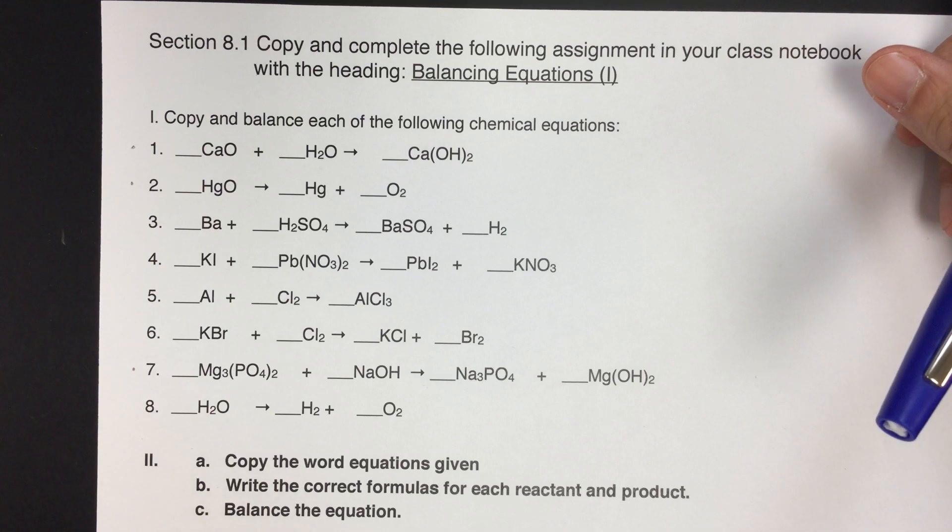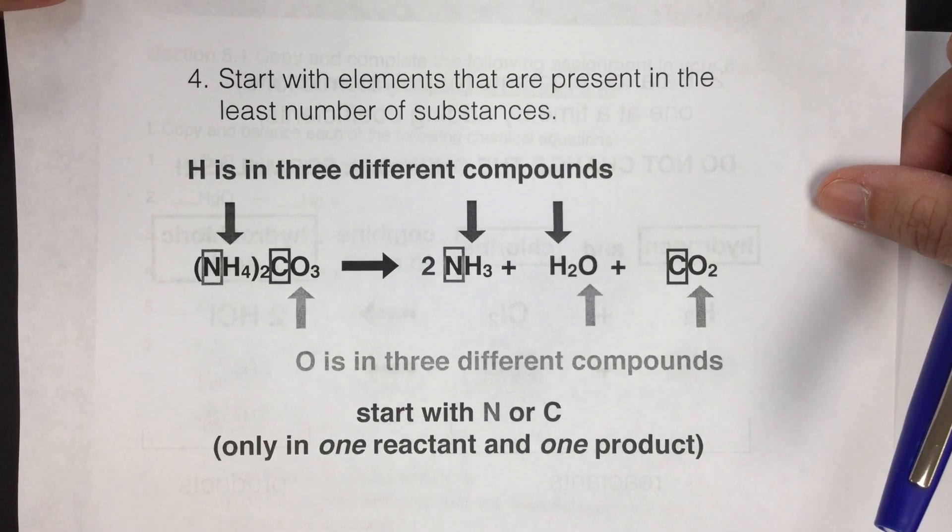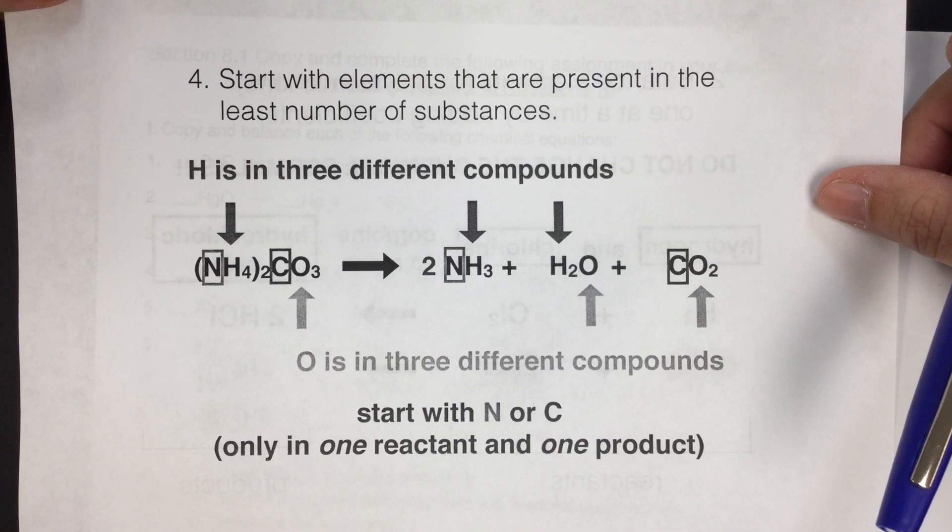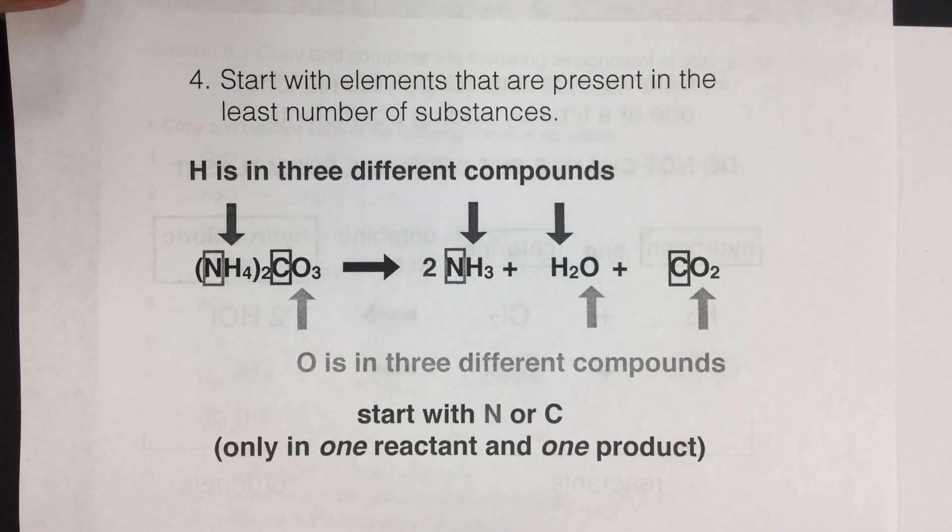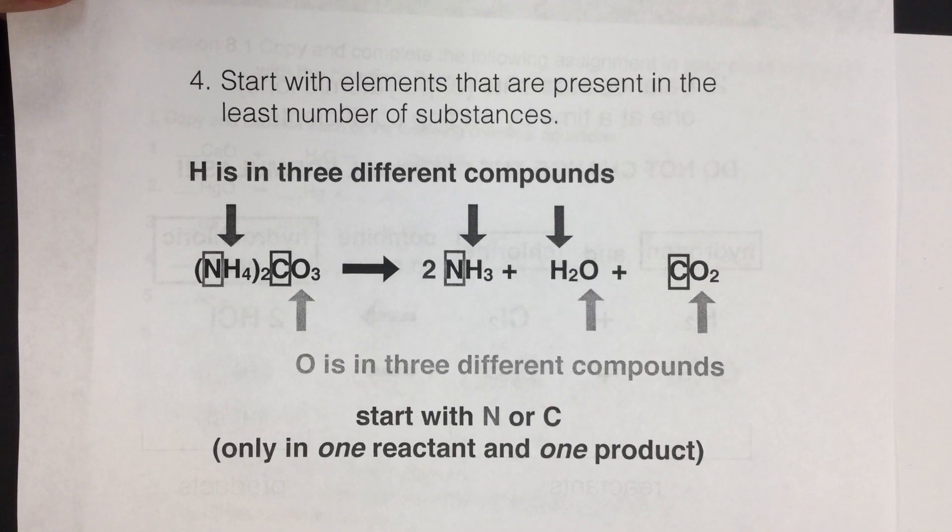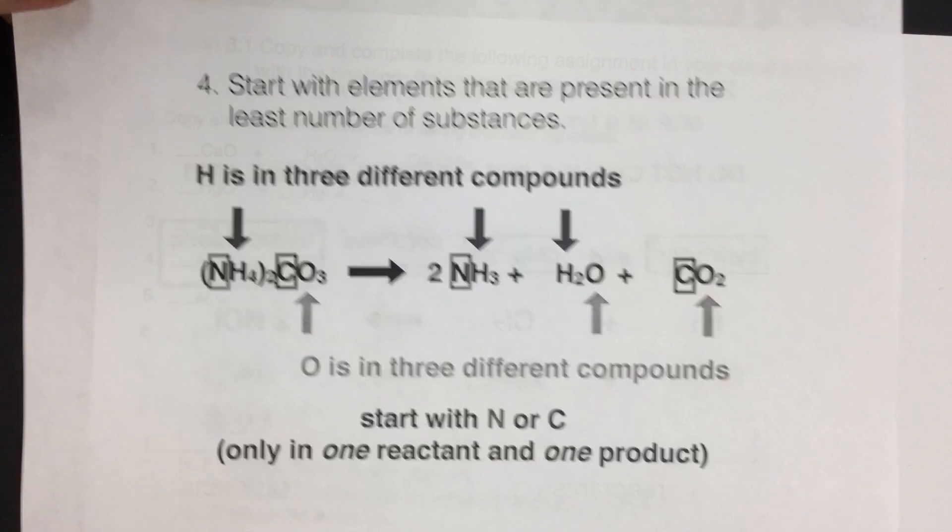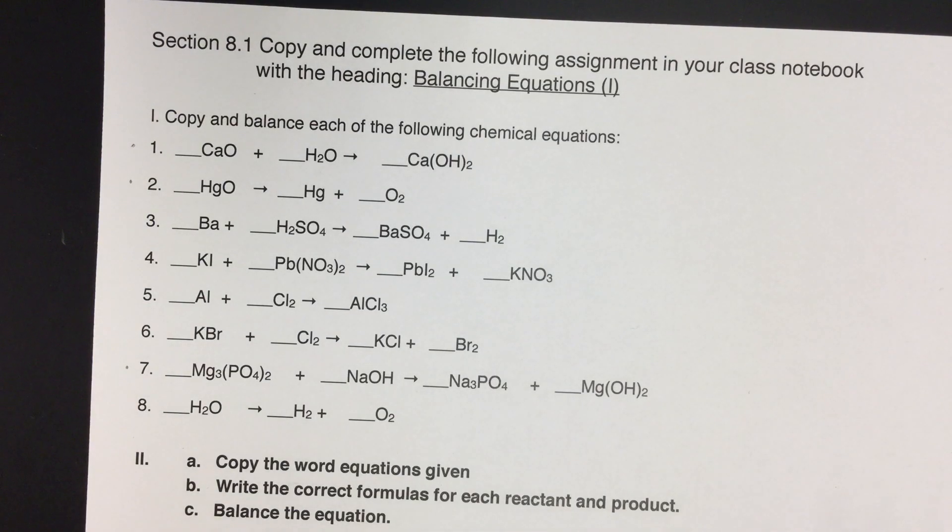And I'm going to also use this hint, number 4, that says we want to start with the elements that are present in the least number of substances. So sometimes in reactions, like in this example, oxygen is in three different compounds and hydrogen is in three different compounds, so it's not a good idea to start with those. We want to start with ones that are more simple and maybe only in one thing on the left and one thing on the right.